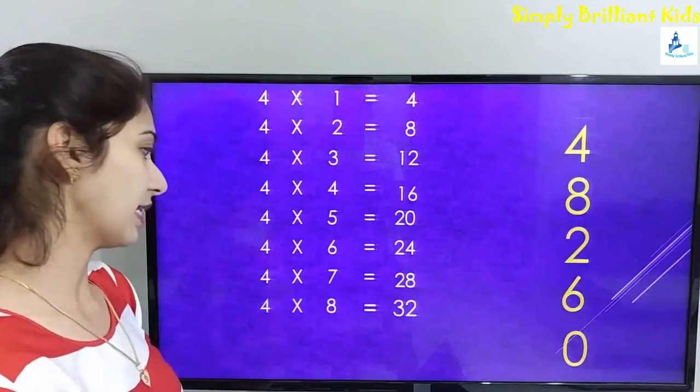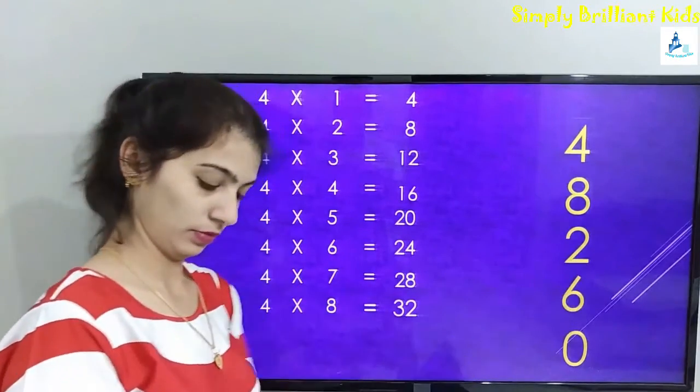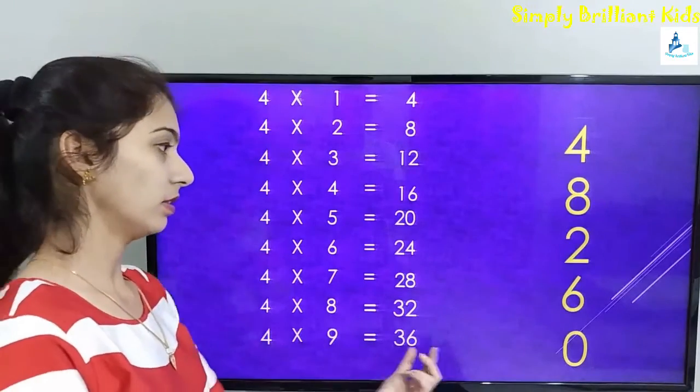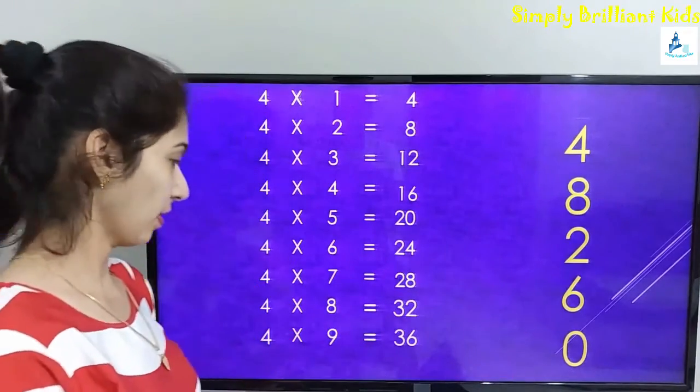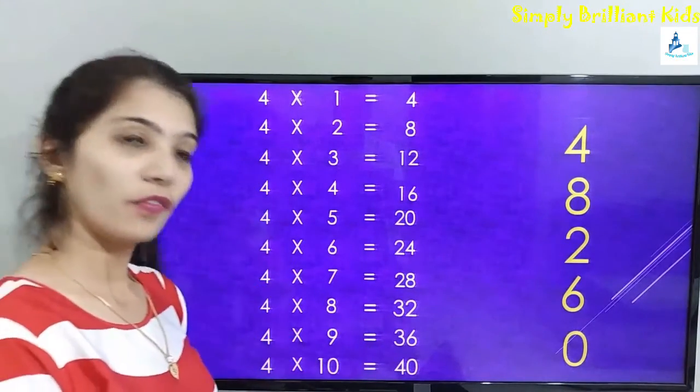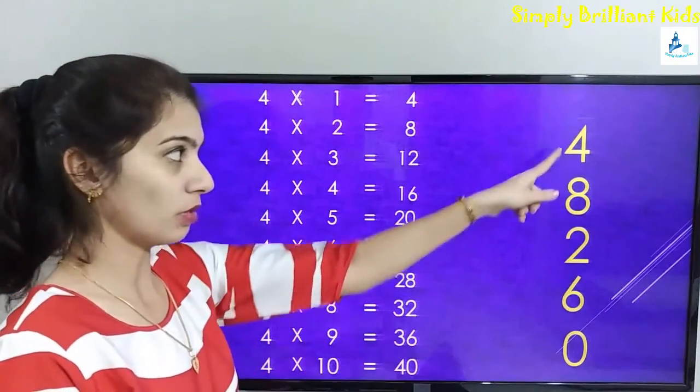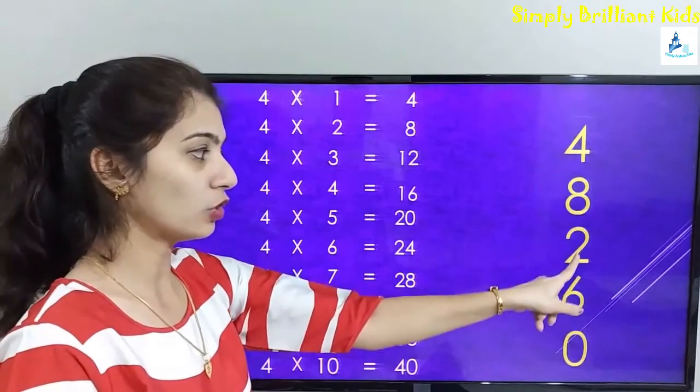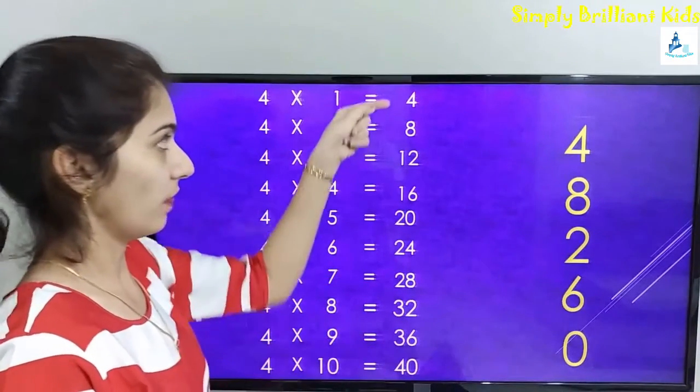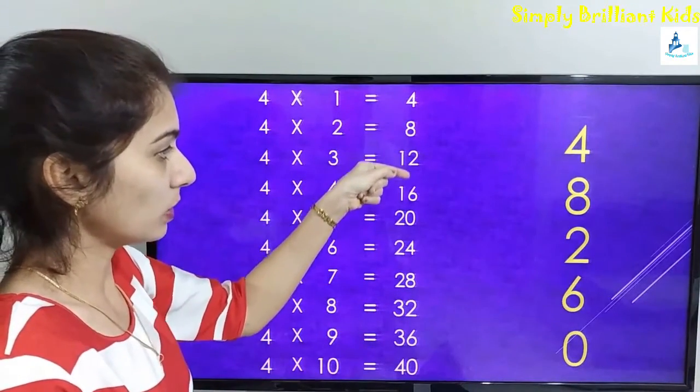Four sixes are twenty-four, four sevens are twenty-eight, four eights are thirty-two, four nines are thirty-six, four tens are forty. So here the series you need to remember is 4, 8, 2, 6, 0. Again the series is going to repeat: 4, 8, 2, 6, 0.